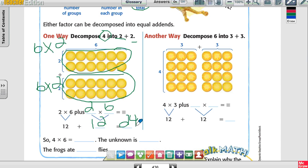Okay. Another way to do it, instead of decomposing 4, I'm going to decompose 6. What two numbers are the same gives me 6? 3 plus 3, so he went 4 rows with 3 each, plus 4 rows with 3 each. So 4 times 3 plus 4 times 3.